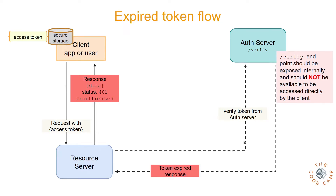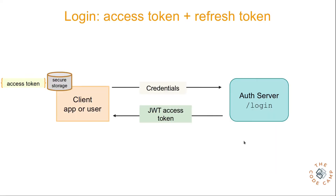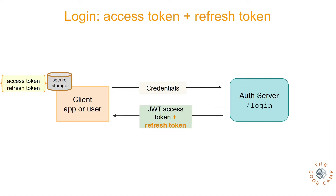To fix this problem, a refresh token is also sent along with the access token at the time of login, and this should also be stored in safe storage. We use this refresh token to generate a new access token when the old one expires. A refresh token is also a JWT token, but the main difference is that it is long-lived — access tokens typically expire in 5 to 10 minutes, whereas a refresh token can have an expiry of 3 to 6 months depending on your use case.